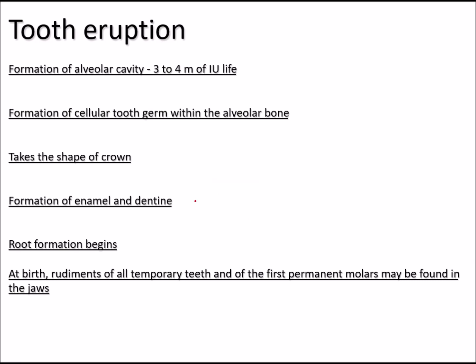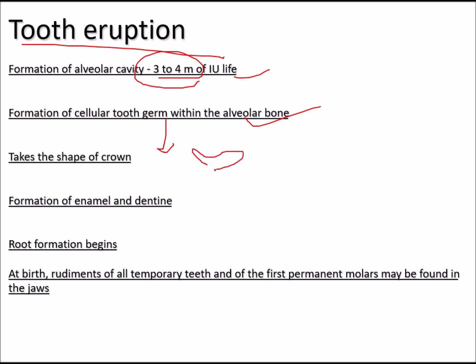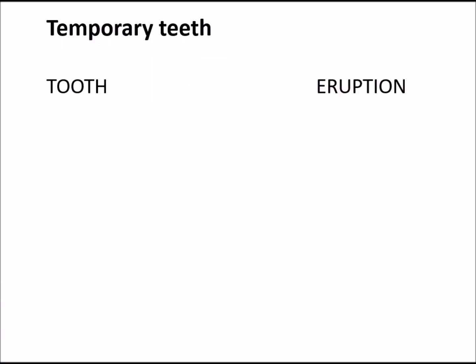Before proceeding, one should know the basic process of tooth eruption. First, there is formation of the alveolar cavity between 3 to 4 months of intrauterine life, followed by formation of the cellular tooth germ within the alveolar bone, then the crown takes shape, then formation of enamel and dentine, and finally root formation begins. At birth, the rudiments of all temporary teeth and the first permanent molar are found in the jaw.